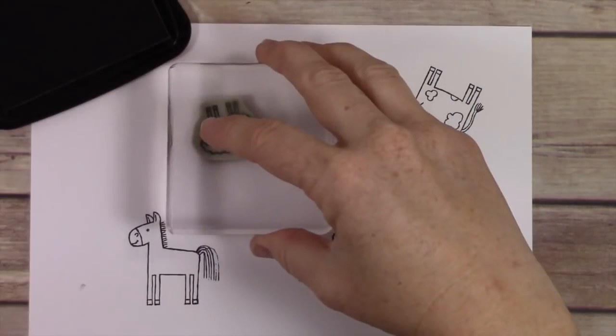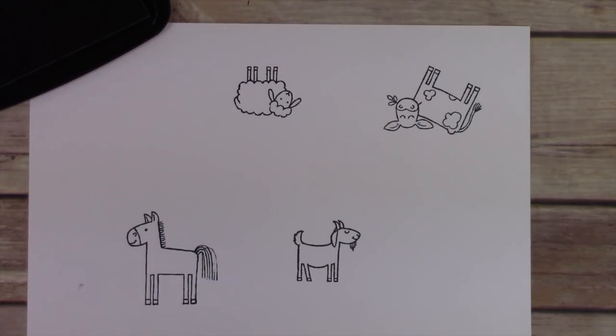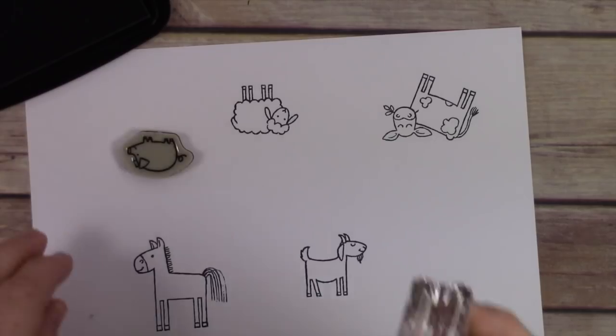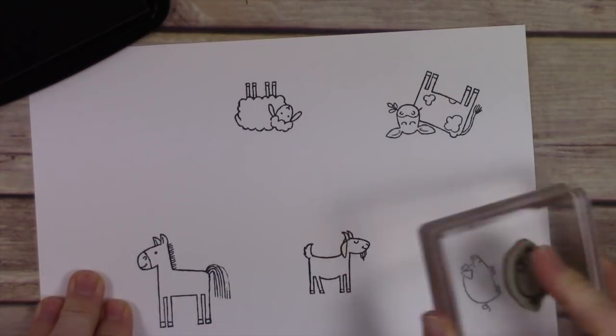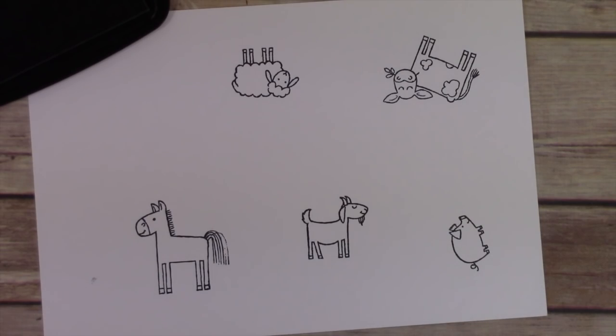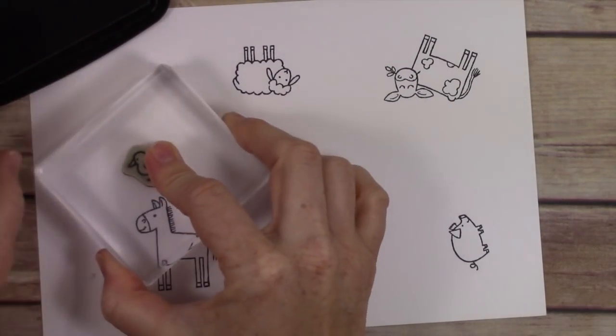Neenah Solar White cardstock is another one that a lot of people use, but I find that it bleeds a lot easier. Since I'm kind of new to Copic coloring, I tend to get more ink on the paper than probably necessary, and that causes my stuff to bleed more than an experienced Copic colorist.